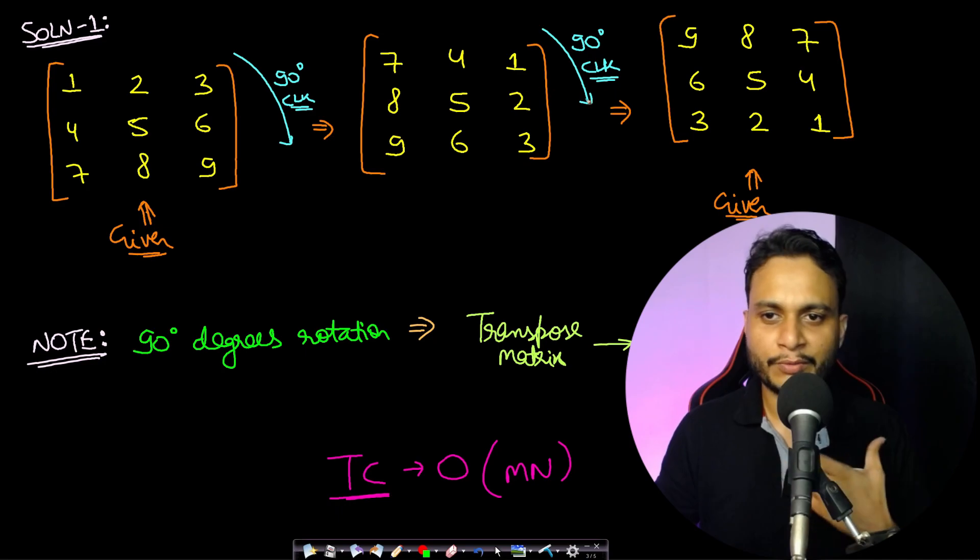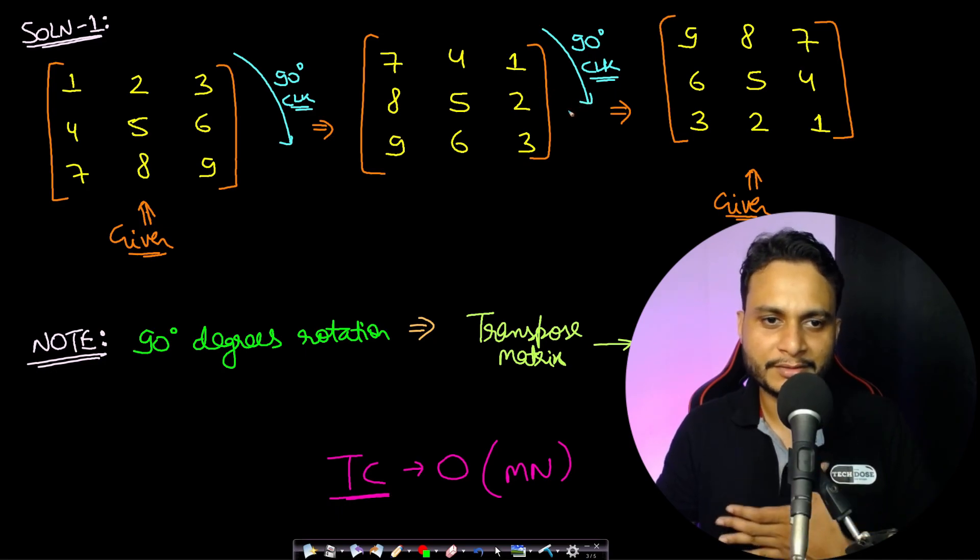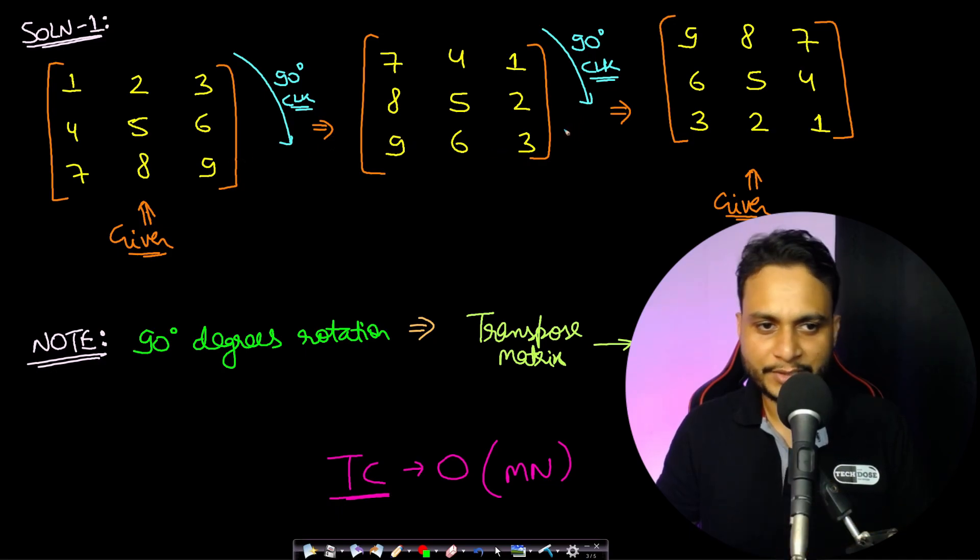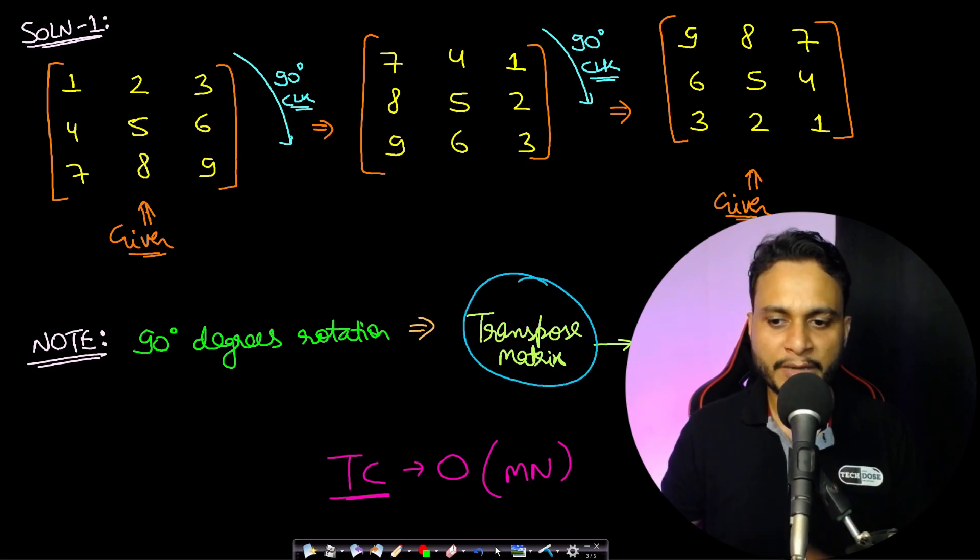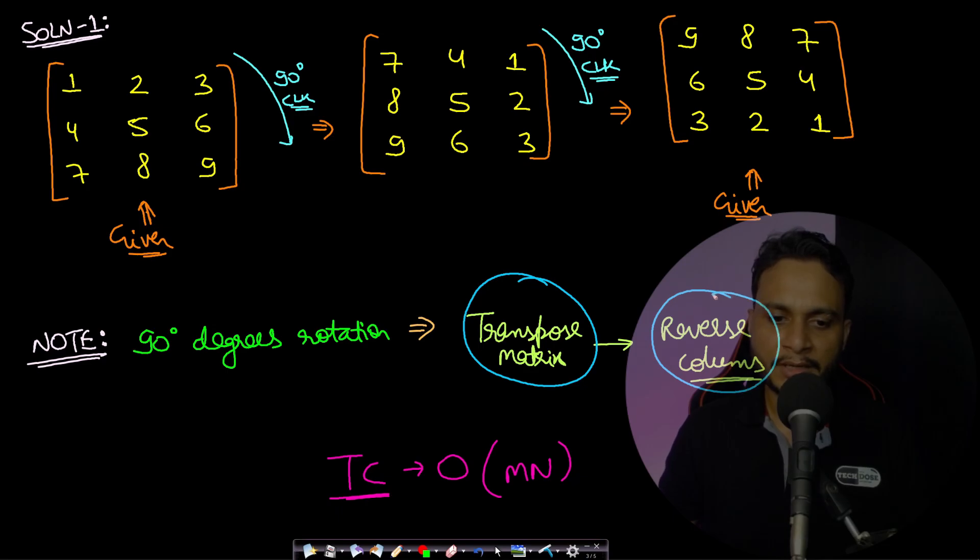The first solution is if you simply rotate the given matrix 90 degrees in the clockwise direction two times, then basically you are rotating the entire matrix by 180 degrees in the clockwise direction. Now this is very simple. We had already seen in our previous video of 90 degrees rotation that we can do the same thing by first finding the transpose of the matrix, and followed by that if we reverse the columns then we can do 90 degree rotation.